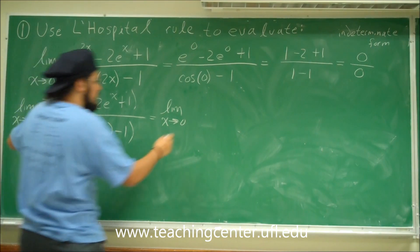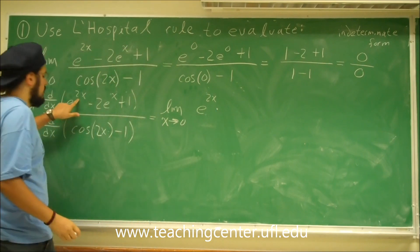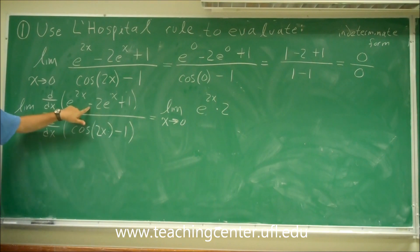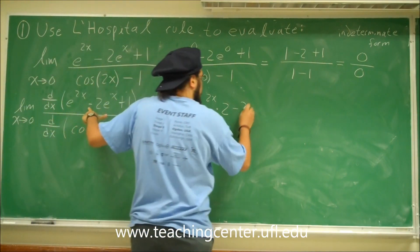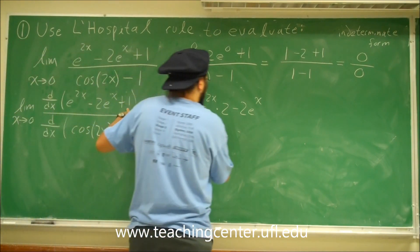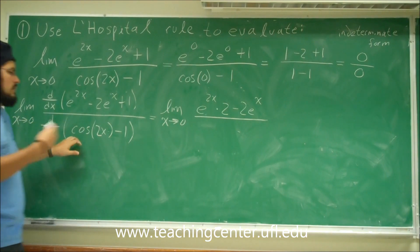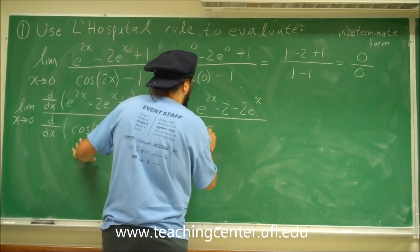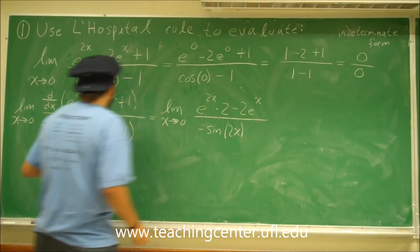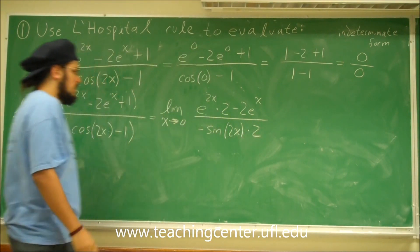Take the derivative of each term separately. The derivative of e to the 2x is e to the 2x times 2, using the chain rule. The derivative of 2e to the x is minus 2e to the x, and the derivative of 1 is 0. Then divide by the derivative of cosine 2x: the derivative of cosine is minus sine, so that's minus sine 2x, times the derivative of 2x which is 2, so times 2.